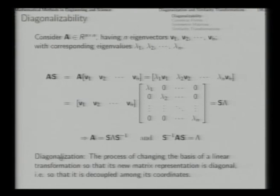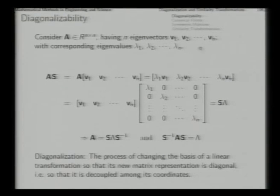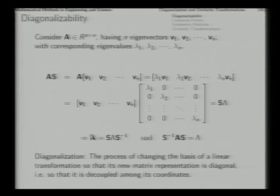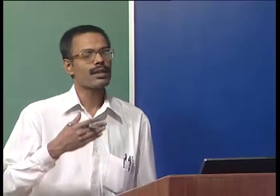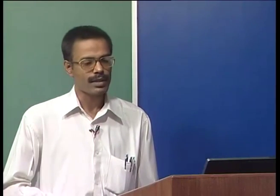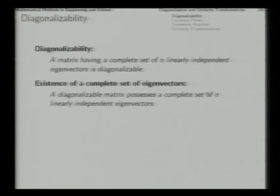In this process the transformation gets decoupled among its coordinates. The necessary condition for this to happen is that the matrix has n linearly independent eigenvectors — the matrix possesses a full set of n linearly independent eigenvectors. A matrix having a complete set of n linearly independent eigenvectors is diagonalizable. The converse is also true: a diagonalizable matrix possesses a complete set of n linearly independent eigenvectors.